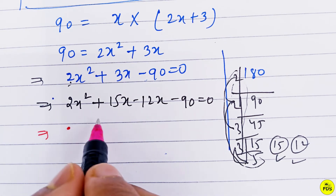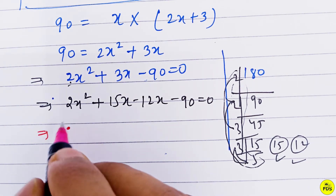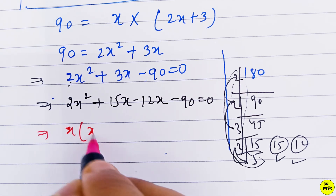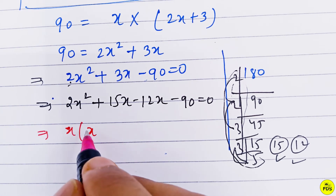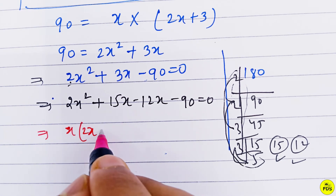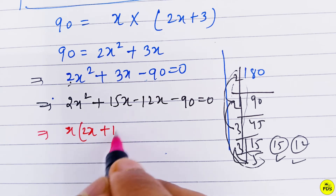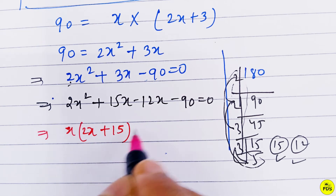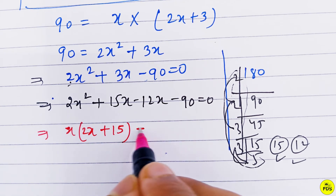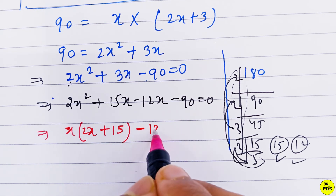Taking x common from the first two terms: x(2x + 15), and taking -6 common from the last two terms: -6(2x + 15).